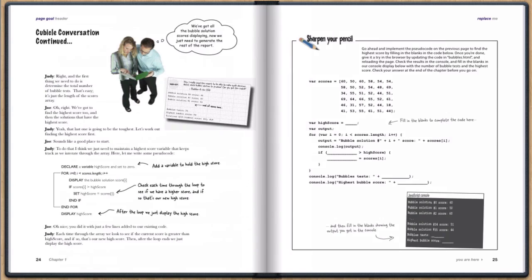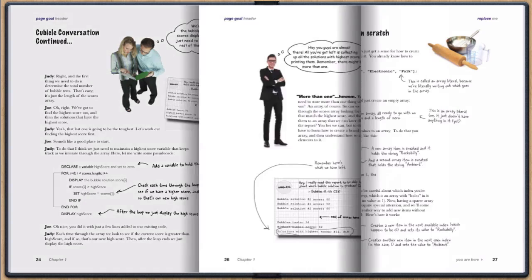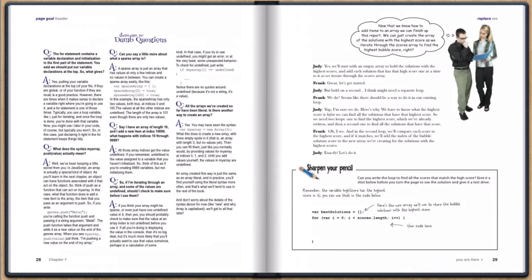In the first part of the report, all we're doing is displaying the bubble test scores in the console. But the CEO wants more than that. He actually wants us to operate on the data in the array to find things like the highest scoring bubble solutions. So, you'll get lots of practice with arrays and the data stored in them as you create the report.